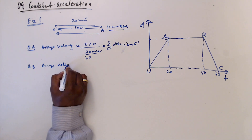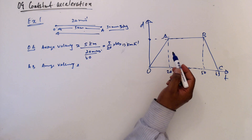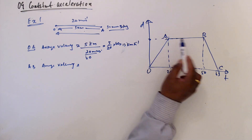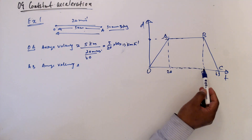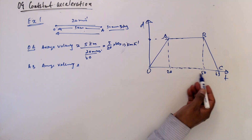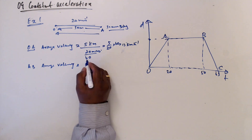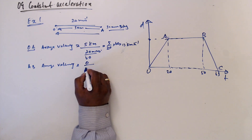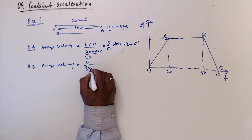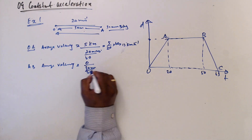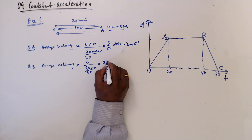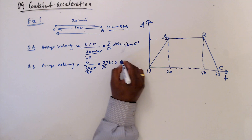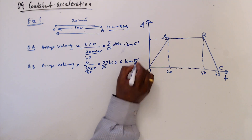For A to B: average velocity — the person stays at A for 30 minutes, so displacement is zero divided by 30 minutes. Converted to hours: zero, so average velocity is 0 km/h. For B back to A: displacement is minus 5 kilometers (negative direction), time taken is 15 minutes. So minus 5 divided by 15 over 60 equals minus 20 km/h.